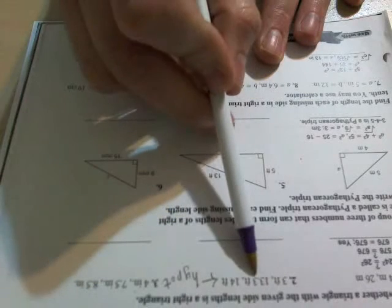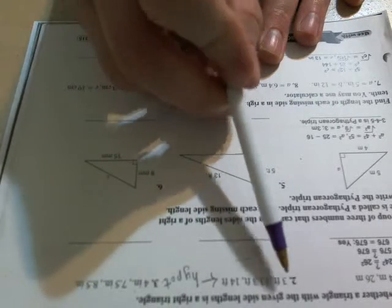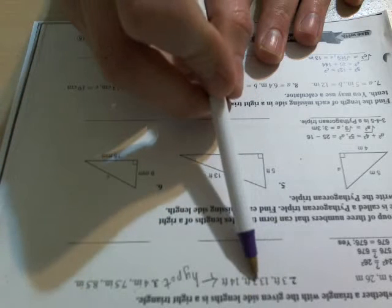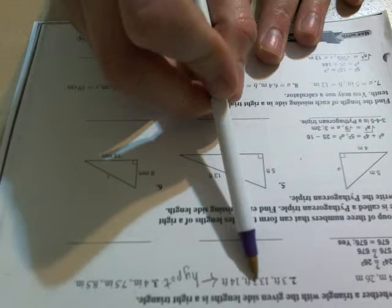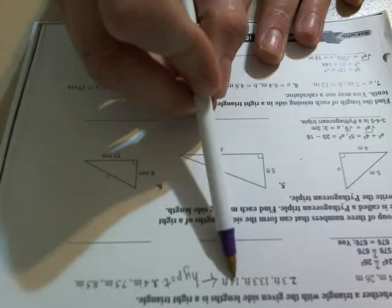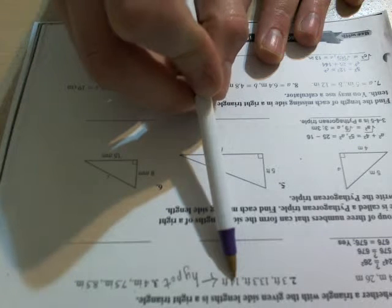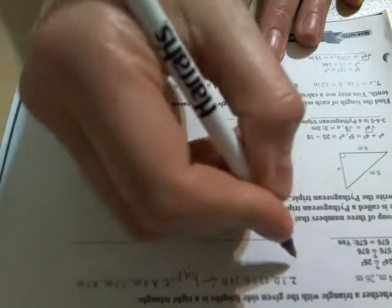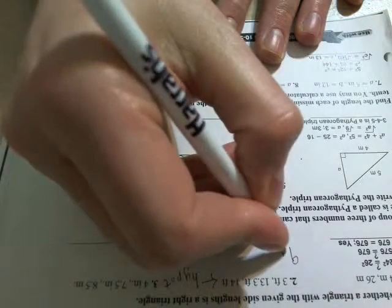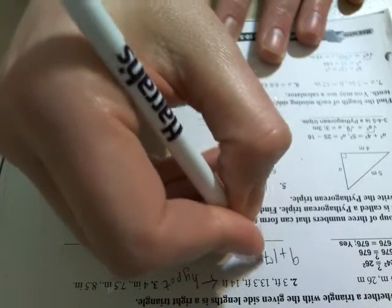So the legs here are going to be 3 and 13.3. I'm going to take this and square it, and this and square it, and add these two up. According to the formula, it has to be the same thing as the hypotenuse squared. If I take 3 and square it, 3 squared is 9. And if I take 13.3 and square it, 13.3 squared is 176.89.